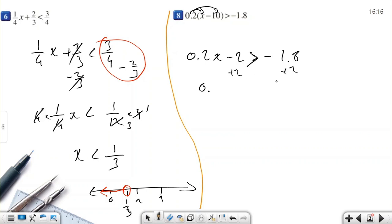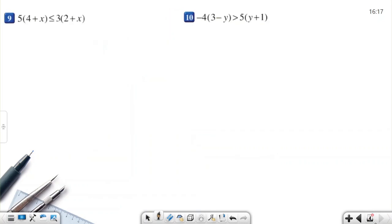If I add 2 to both sides, 0.2x greater than minus 1.8 plus 2. If you divide both sides by 0.2, x is greater than 1. I'm not going to draw the graph. You can handle drawing the graph. We saw lots of examples in previous videos.